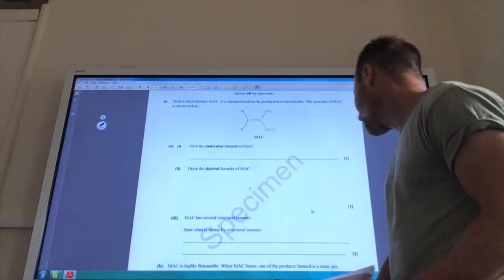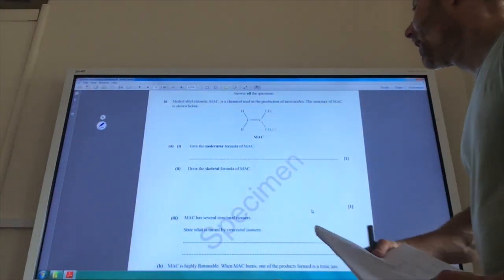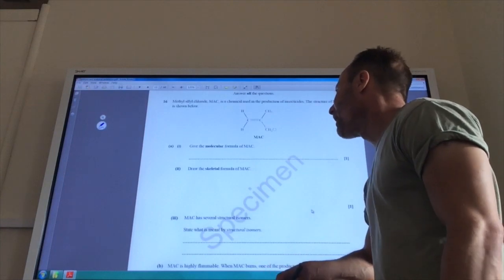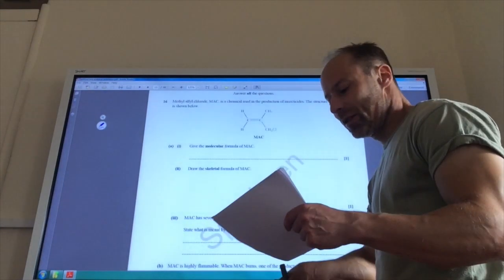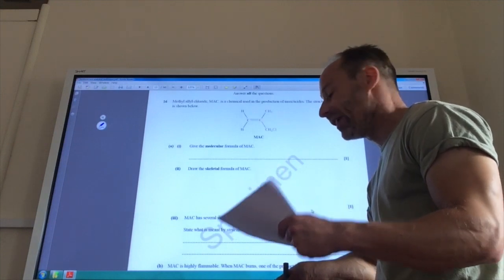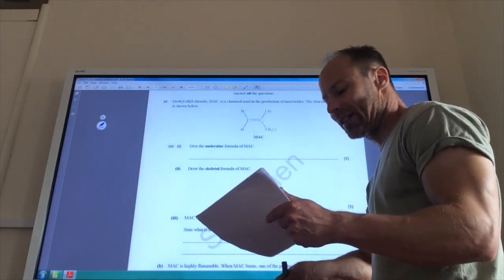Right, so time to get into the serious stuff now. First of all, we'll make the formula of Mach. Count out your atoms, see what you get up with. You've got four carbons, seven hydrogens, and a chlorine. So, C4H7Cl.